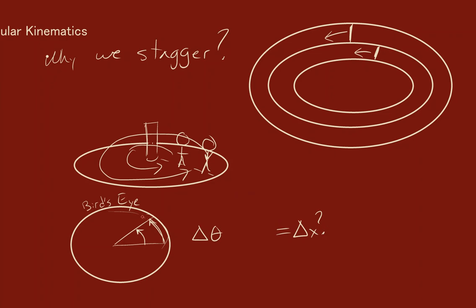Well, if that person on the outside is making one whole loop around, they are essentially making a circle. So that circle would have a circumference of 2π times r, where r is their radial distance away.